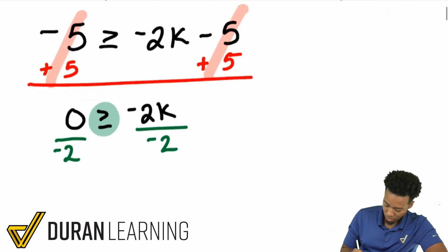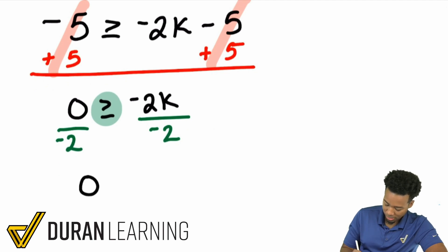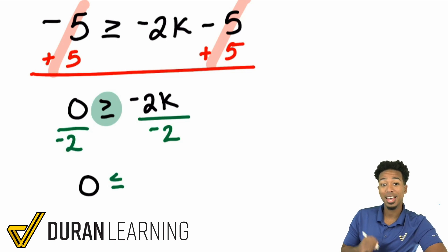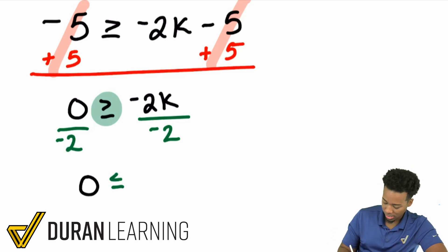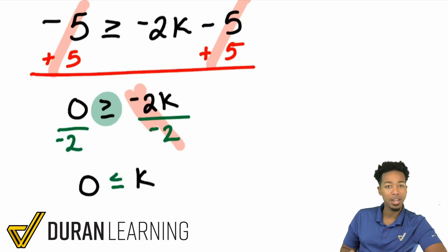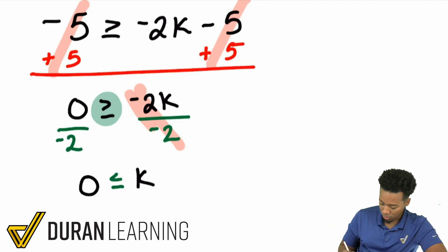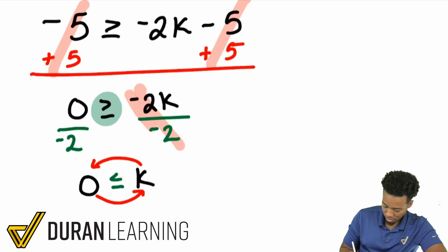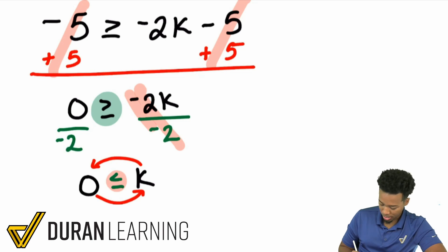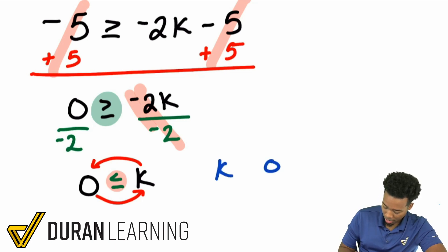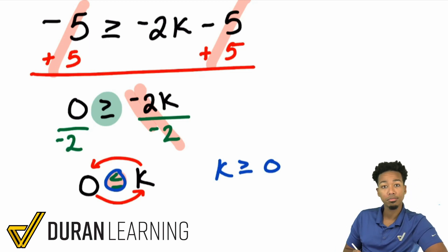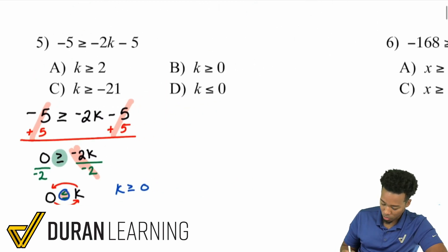So 0 divided by anything is 0, and that inequality flips to less than or equal to. That cancels out on the right side and we get k by itself. Now our answer choices need the variable on the left, so I'm going to flip the sides. But remember, when you flip them you also need to flip the inequality. So that ends up being k is greater than or equal to 0. Just like that — k is greater than or equal to 0. This was a tricky one because you could have easily picked D.